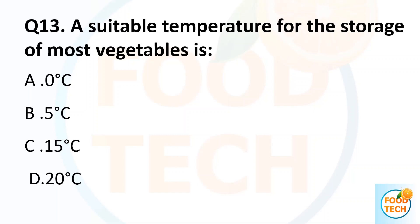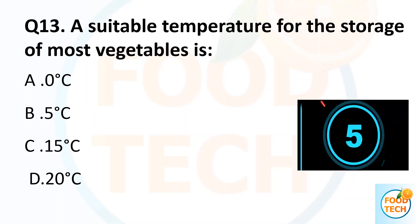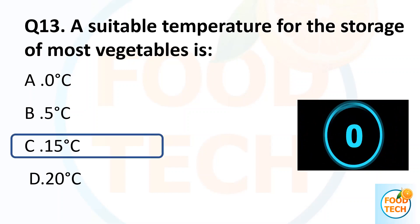Question 30. A suitable temperature for the storage of most vegetables is: A. 0 degree Celsius. B. 5 degree Celsius. C. 15 degree Celsius. D. 20 degree Celsius. Answer C. 15 degree Celsius.